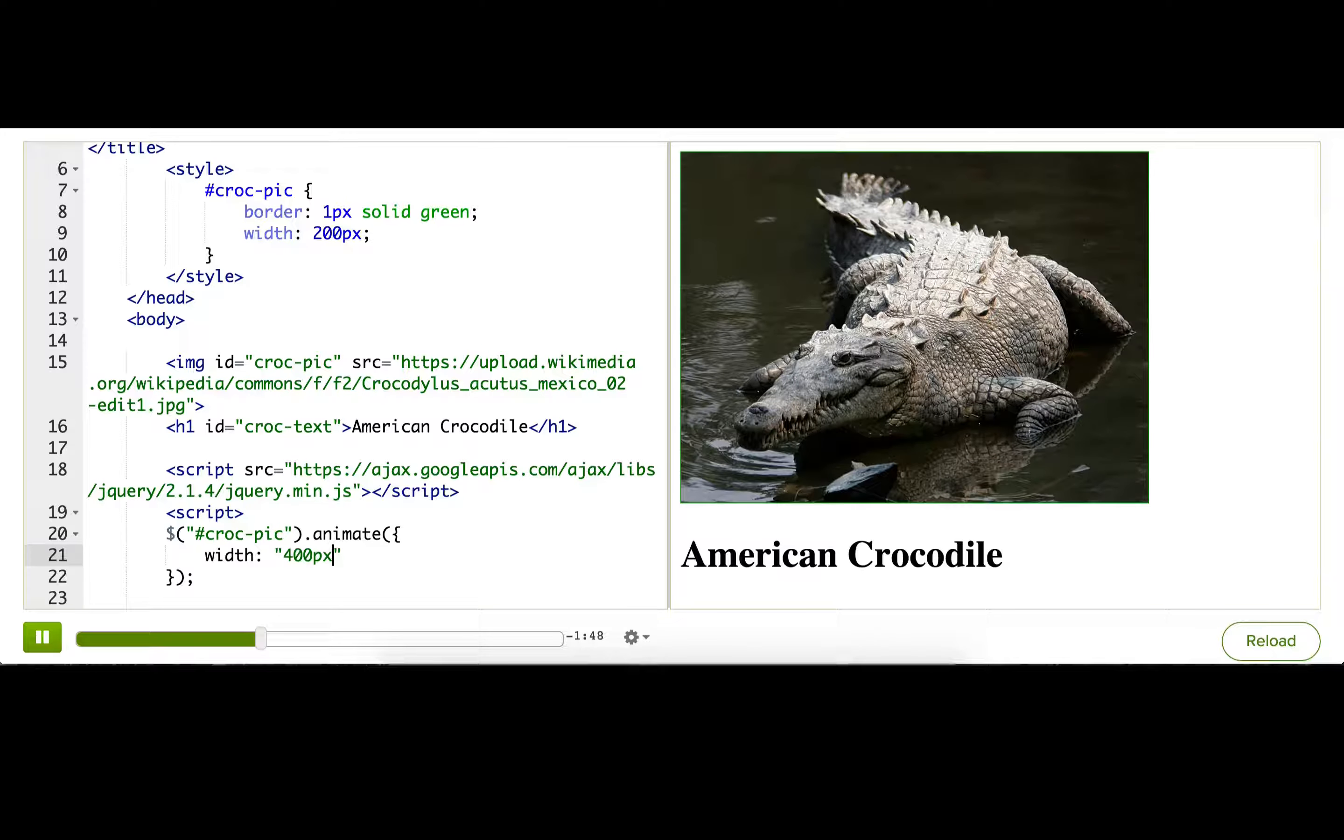All right, so jQuery figured out the starting value for the width, 200px, figured out how much to change it in each frame, and made sure that it ended at this target value of 400px. And it did it all for us. Nice and easy.